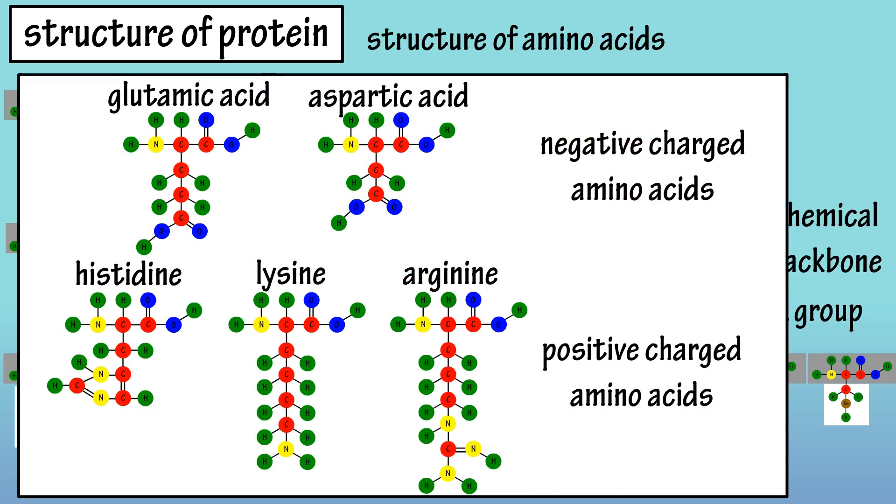Here are the charged amino acids. Since they are charged, an ionic bond can form between an R group with a negative charge, and an R group with a positive charge.